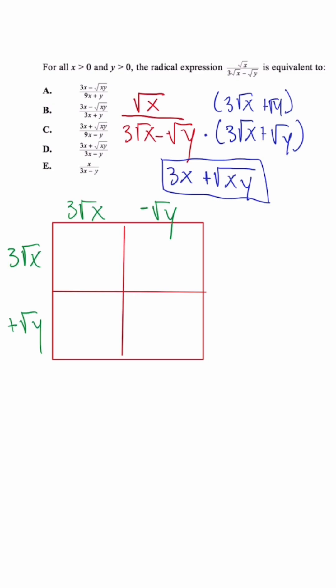So when we multiply in the first box, we're going to get 9x. When we multiply 3 radical x and negative radical y, we'll get negative 3 radical xy.